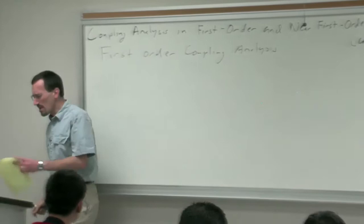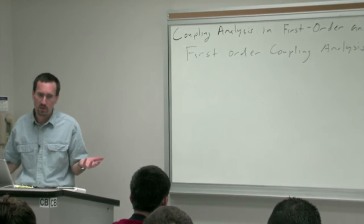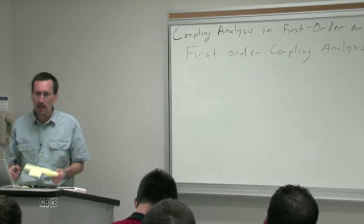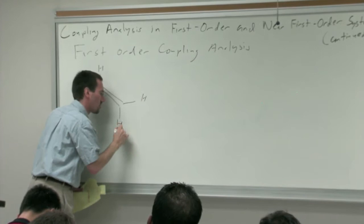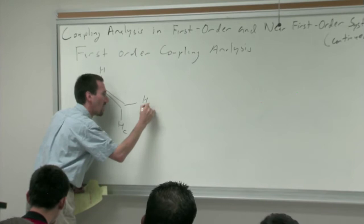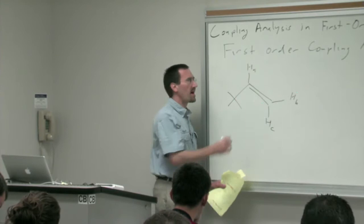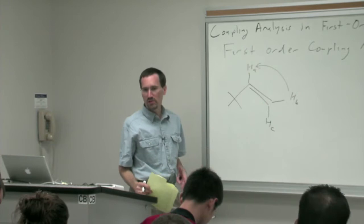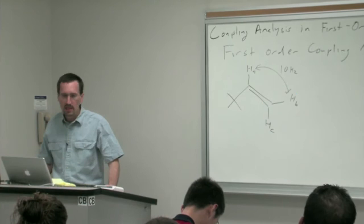I'll start with a simple example. Remember last time we talked about typical coupling constants - most vicinal three-bond couplings are about 7 hertz, but some fall outside that range. Let's think about alkenes. Take 3,3-dimethyl-1-butene, or tert-butyl ethylene. In alkenes, cis couplings are on the order of about 10 hertz - that's a good number to keep in your head.